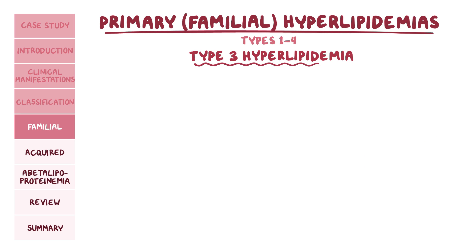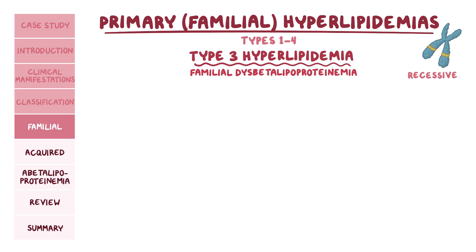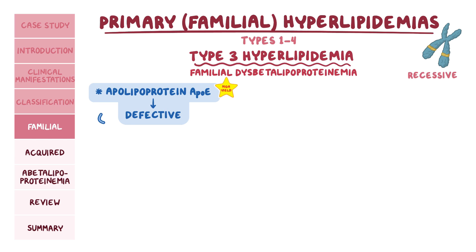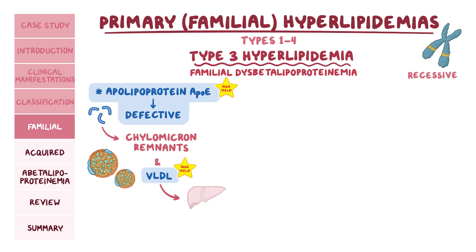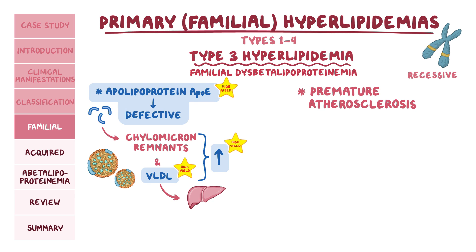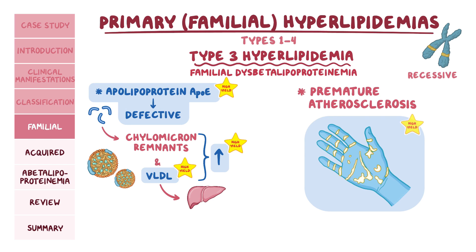Type 3 familial hyperlipidemia is a rare autosomal recessive disorder also known as familial dysbetalipoproteinemia. In this disorder, the apolipoprotein E, or ApoE, is defective. This protein normally assists with the uptake of chylomicron remnants and VLDL by the liver, so they are elevated in this condition. It's also characterized by the development of premature atherosclerosis. However, unlike type 2 hyperlipidemia, the xanthomas in this condition tend to develop on the palms.